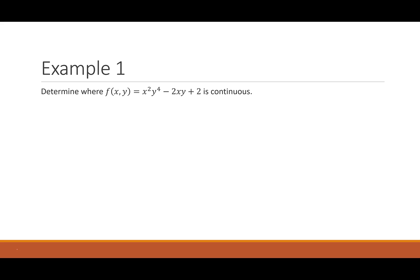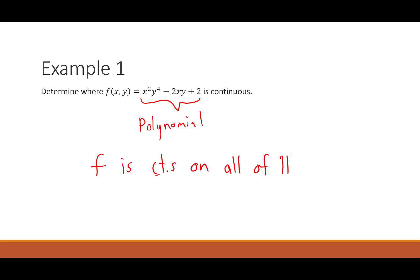Let's look at some examples. Example one: determine where f(x, y) = x²y⁴ − 2xy + 2 is continuous. Notice this is a polynomial, and polynomials are continuous on their domain. Polynomials are super nice — their domain is everything. So this function f is continuous on all of R².